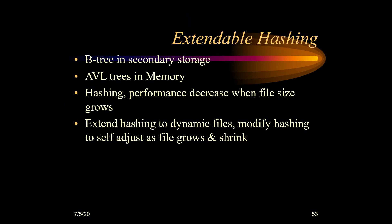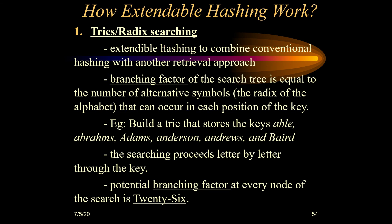Extendable hashing. In B-trees we have seen that it is used for storage in secondary devices, and in AVL trees we use for storing trees in memory. We have seen that both techniques were not able to give us order-of-one performance. So we went for hashing, which improved the efficiency. But as the file grew, the performance decreased again. So we go for the next technique: extendable hashing, which modifies our hashing technique so it is able to adjust itself whenever the file grows or shrinks.